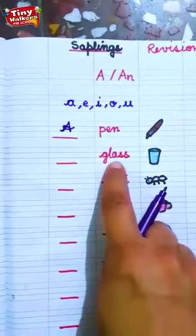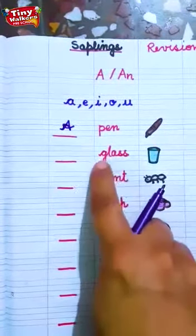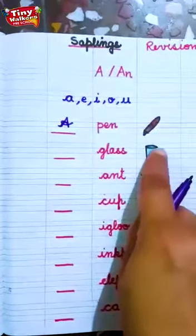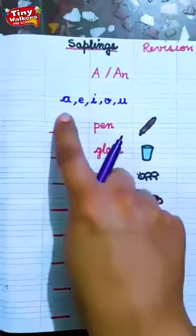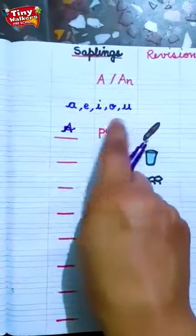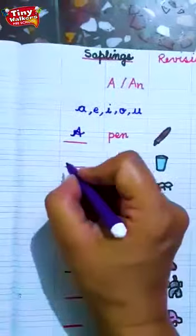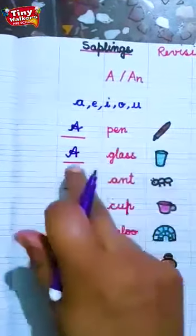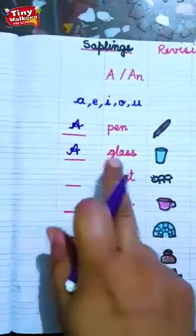Yahan kya likhenge hum? Now see here. G, L, A, S, S. Glass. Glass. Glass. So children, glass. See, glass is a vowel. G sound is a vowel. No. It's a consonant. So we will again write A here. A glass. A glass.